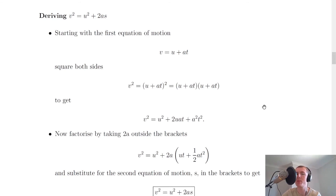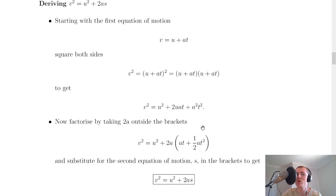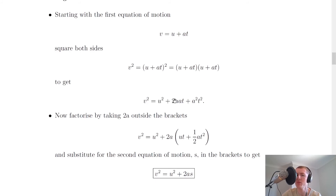Lastly we're going to derive v² equals u² plus 2as, our third equation of motion. Starting with the first equation v equals u plus at, we square both sides to get v² equals (u plus at)². Expanding that out: v² equals u² plus u·at plus at·u plus a²t², which simplifies to v² equals u² plus 2uat plus a²t².